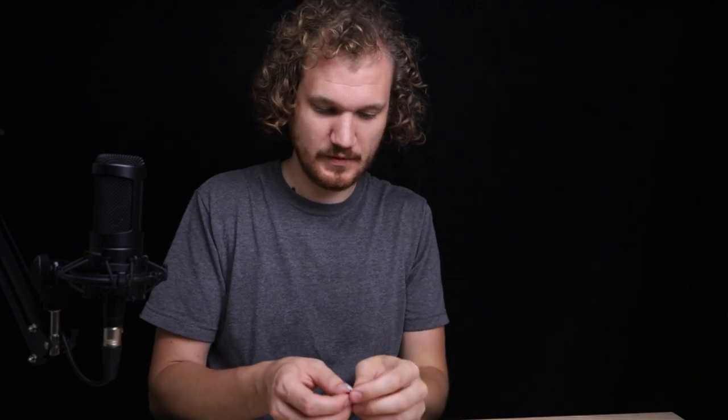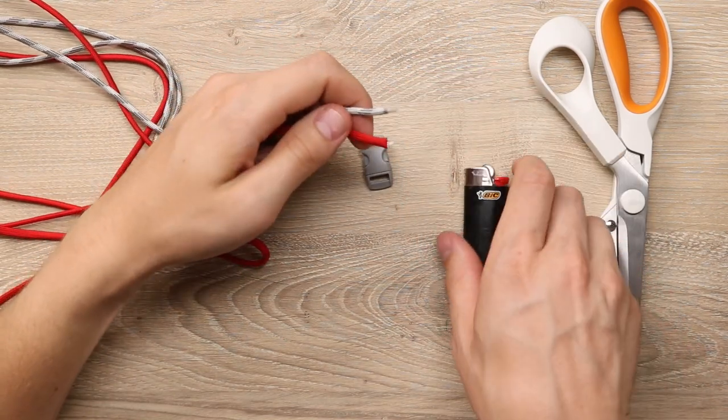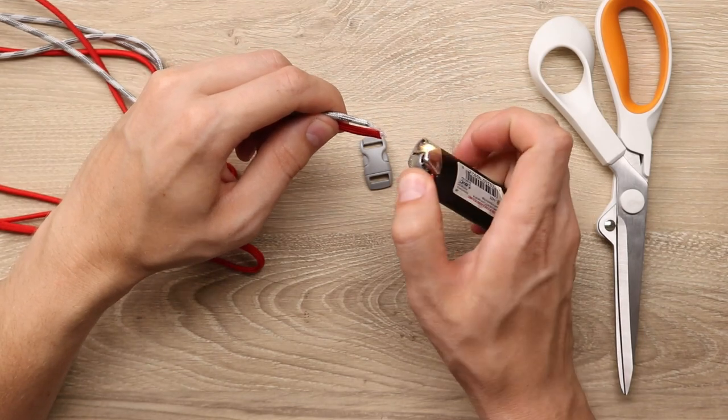So like with most 2 color bracelets, we're going to start by fusing the colors together. So we'll just take an end of each. It helps if they're not super melted on the ends, I just barely melted these ones. That way we can melt them more now without turning them black.